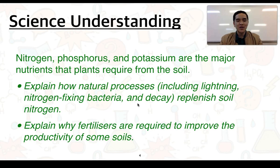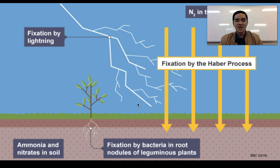Nitrogen, phosphorus and potassium are major nutrients that plants require from the soil. You'll need to explain how natural processes including lightning, nitrogen-fixing bacteria and decay replenish soil nitrogen, as well as explain why fertilizers are required to improve the productivity of some soils. Nitrogen is very abundant in our atmosphere — it makes up approximately 78% of the gas particles in air — and this nitrogen needs to be made available in a form that plants can use to allow for growth.